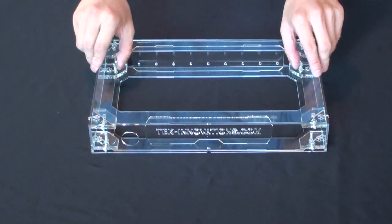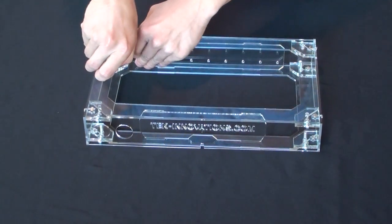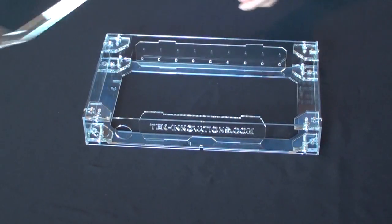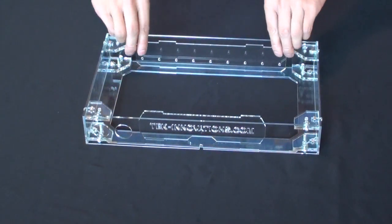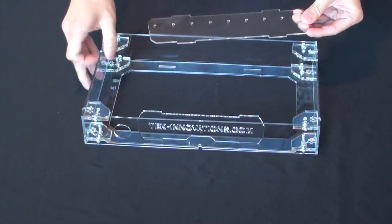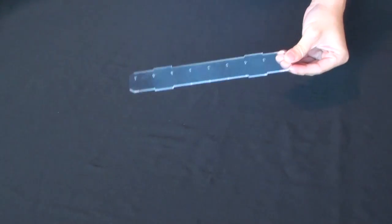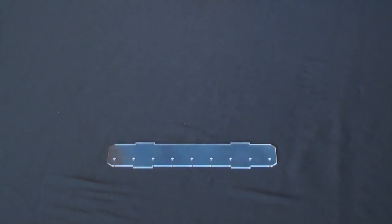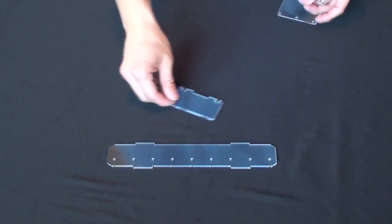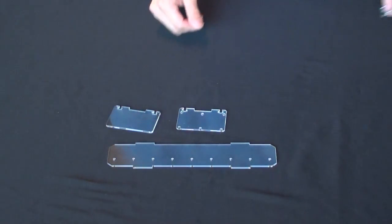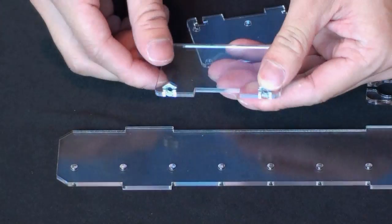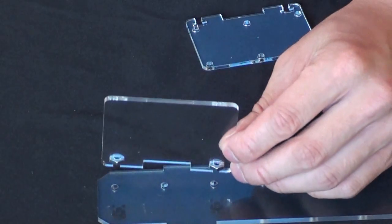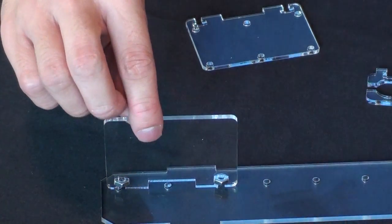But before we complete the case, I want to talk more about the PCB plate and PCB holders. Let's take the PCB plate out first by removing one of the borders and then removing the PCB plate. Your case comes with two PCB holders and one wire loop piece. The PCB holders are easily attached to the PCB plate by placing the hex nuts into the slots, then choosing which holes on the PCB plate you want to attach it to.